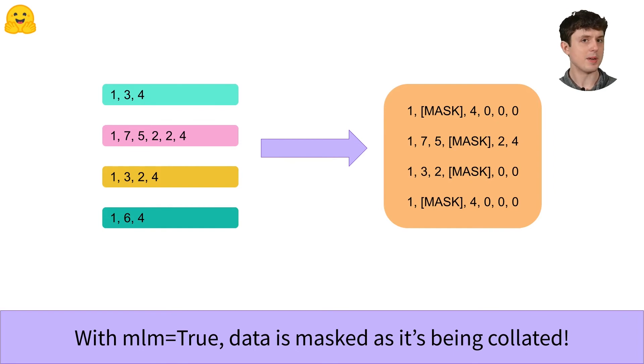But the process of random masking is surprisingly complex. If we follow the protocol from the original BERT paper we need to replace some tokens with a mask token, some other tokens with a random token and then we keep a third set of tokens unchanged. This is not the lecture to go into the specifics of that or why we do it. You can always check out the original BERT paper if you're curious. It's well written, it's easy to understand.